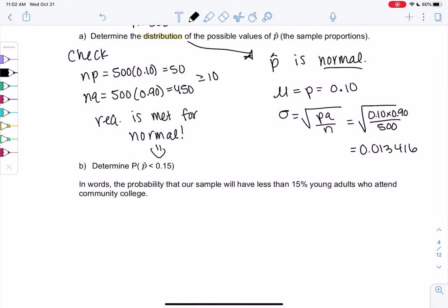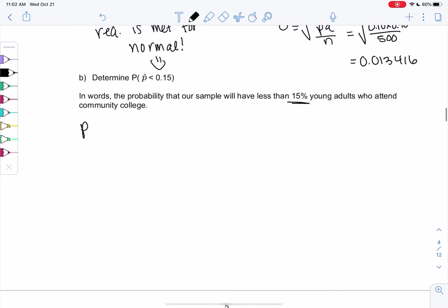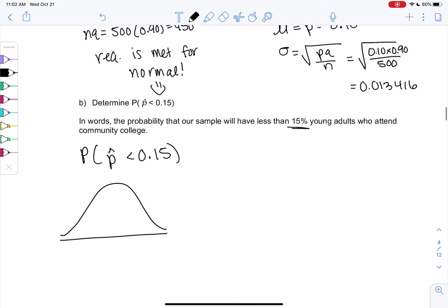So now that we know it's normal, we can find probabilities. So part b, determine the probability that p-hat is less than 0.15. So that's saying what's the probability that our sample will have less than 15% young adults who attend community college. So p-hat less than 0.15. Since it's a normal curve, I'm going to go ahead and draw that, because it's normally distributed. If the requirement wasn't met, we wouldn't know what to do.